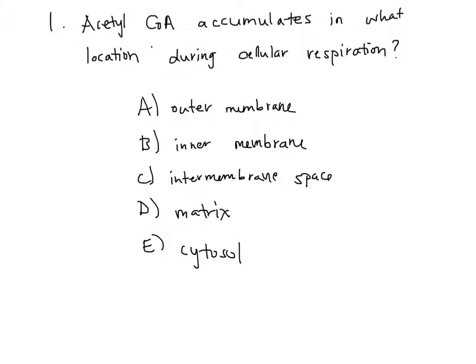Let's start off with a concept question. Number one, acetyl-CoA accumulates in what location during cellular respiration? A, the outer membrane, B, the inner membrane, C, the intermembrane space, D, the matrix, or E, the cytosol?